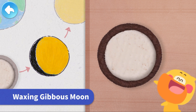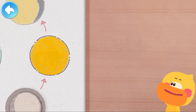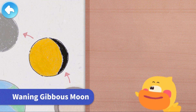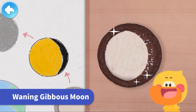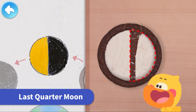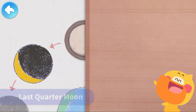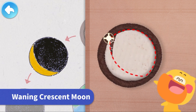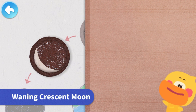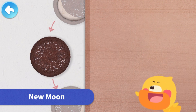Waxing gibbous moon — the bulging moon looks like a lemon. Full moon — the round sandwich cookie is just right. Waning gibbous moon cookie. Last quarter moon — the semicircular last quarter moon looks like a hat. Curved waning crescent moon — it looks like an eyebrow. New moon — a cookie without filling is like a new moon.